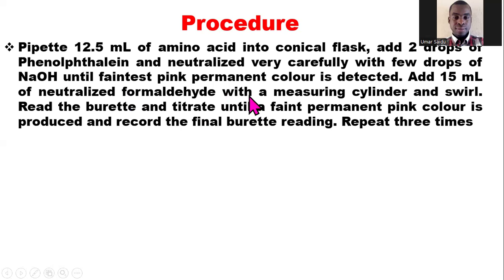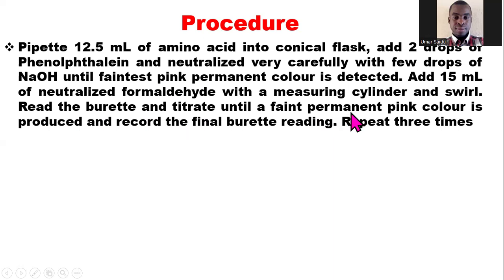After detecting the faint permanent pink color, we measure 15 mL of neutralized formaldehyde using a measuring cylinder and add it to the solution in the conical flask. We swirl to mix well, check the burette reading, and continue the titration until we again obtain a faint permanent pink color. We then record the final burette reading.